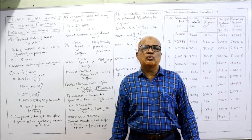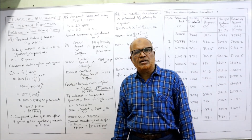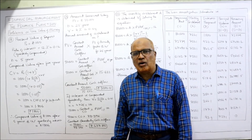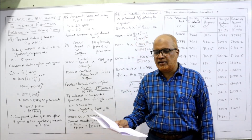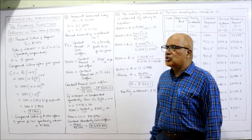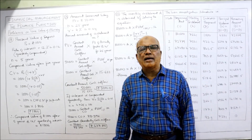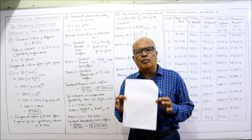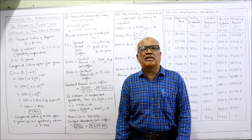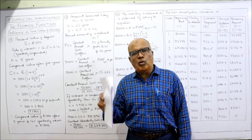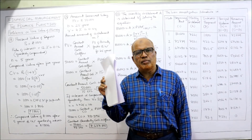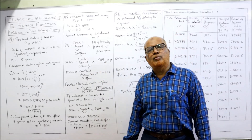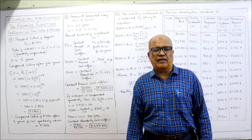In time value of money, we have the discounting technique as well as the compounding technique. For finding out the future value, we use the compounding technique, and for finding out the present value, we use the discounting technique. Before starting the 18th problem, I expect my viewers to have a printout of the problems given in the link under my description. Always keep the problem ready and take a screenshot of the points written on the board.